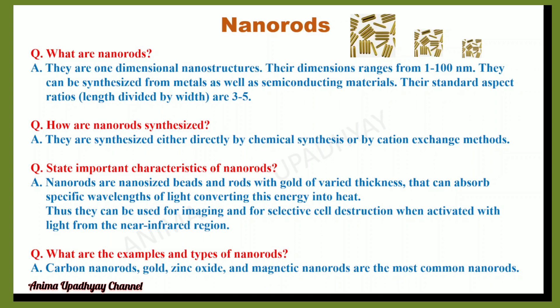What are important characteristics of nanorods? Nanorods are nano-sized beads and rods with gold of varied thickness that can absorb specific wavelengths of light, converting this energy into heat. Thus, they can be used for imaging and for selective cell destruction when activated with light from the near-infrared (near-IR) region.